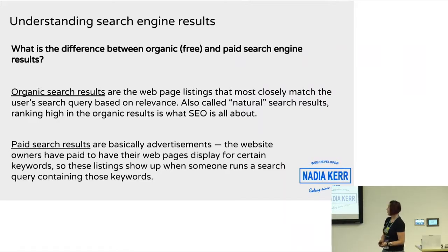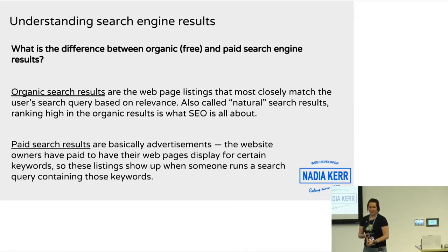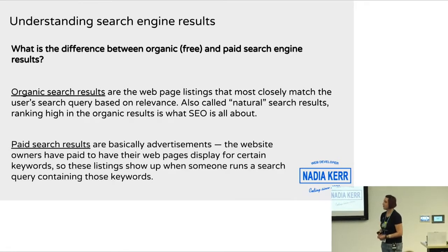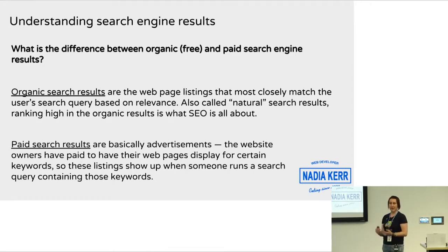So, understanding search engine results: what's the difference between organic — also known as free — and paid search engine results? Organic search results are the pages most closely related to what someone is querying. These are the natural search rankings — the search engines picking up the keywords, phrases, and information and text on your actual pages. Paid search results are the advertised paid listings that come up, usually above the natural listings on search engines, sometimes down the sidebar.